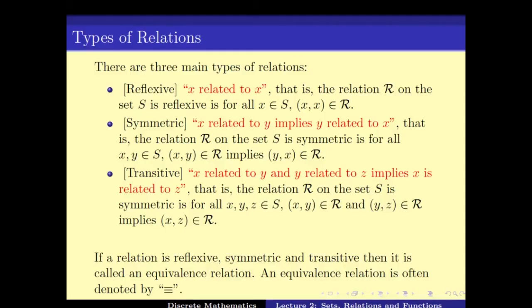Here are three main types of binary relations. Number one is the reflexive binary relation, meaning x is related to x — so (x, x) is in the relation R for every x. Second is the symmetric binary relation: if x is related to y, then y must be related to x, or in other words (x, y) ∈ R if and only if (y, x) ∈ R. Third is the transitive relation: if (x, y) ∈ R and (y, z) ∈ R, then (x, z) ∈ R — if x is related to y and y is related to z, then x is also related to z. If a binary relation has all three properties — reflexive, symmetric, and transitive — we call it an equivalence relation, usually denoted by the three-horizontal-lines symbol.